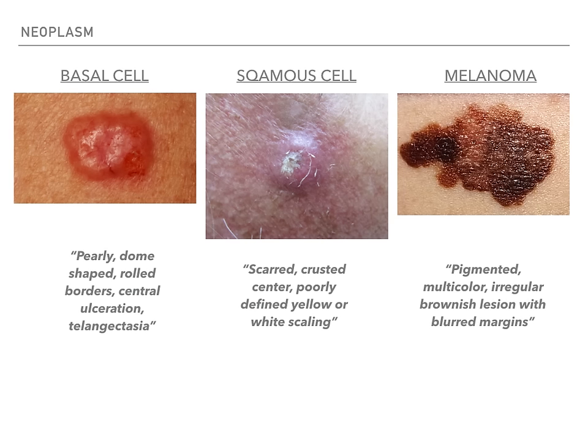Squamous cell carcinoma is going to look really disgusting — scarred, crusted, ulcerated, poorly defined with yellow or white scaling. Basal cell looks like a nice soft little bean; squamous looks like an ugly one. It's scaling, ulcerated, crusty. Squamous cell is ugly. Basal cell has a little blood vessel, has telangiectasia, but squamous cell is crusted and gross.